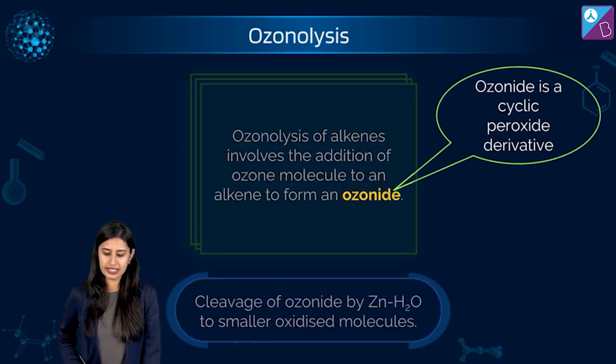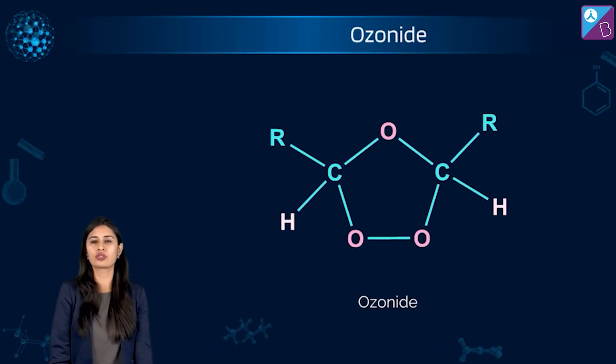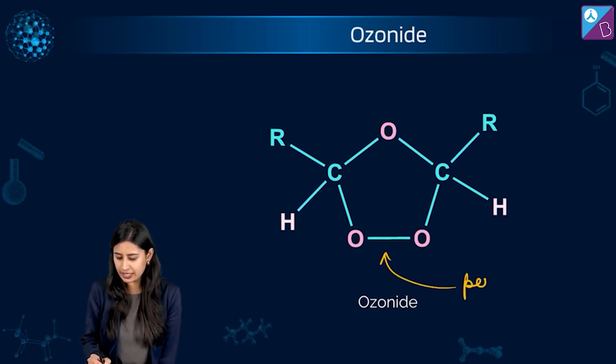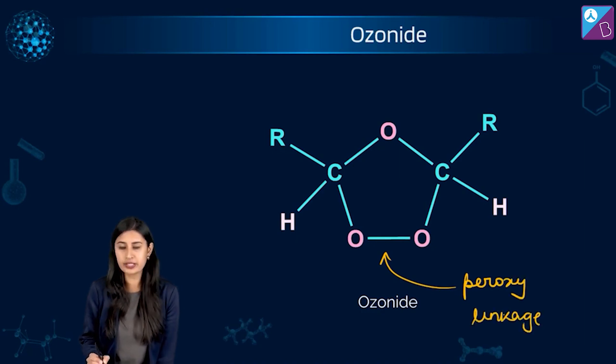So what is this? Ozonide is nothing but a cyclic peroxide derivative which looks like this. This is ozonide. Cyclic peroxide derivative. Where do you see peroxide? This is a peroxy linkage.